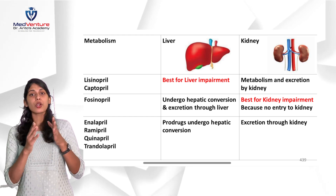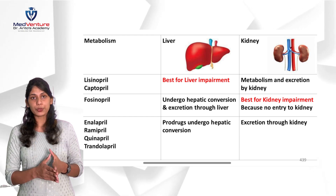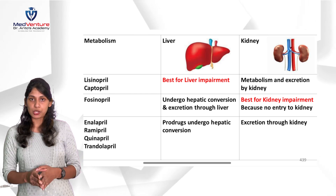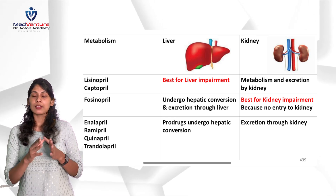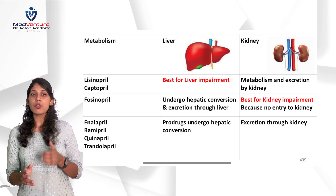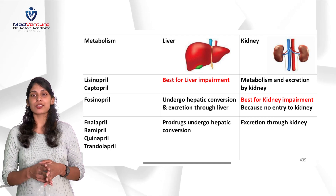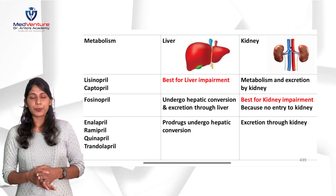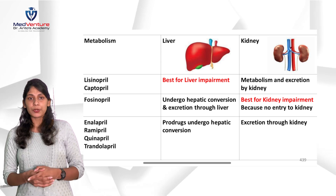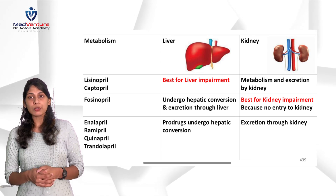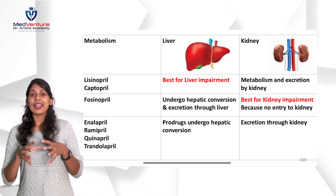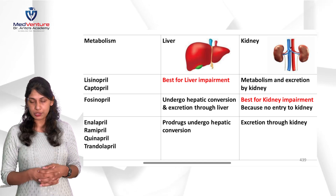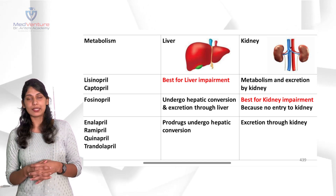Fosinopril undergoes hepatic conversion and excretion through the liver, making it the best ACE inhibitor for kidney patients because it does not enter the kidneys. The remaining drugs — enalapril, ramipril, quinapril, and trandolapril — are prodrugs that undergo hepatic metabolism and are excreted through the kidneys.